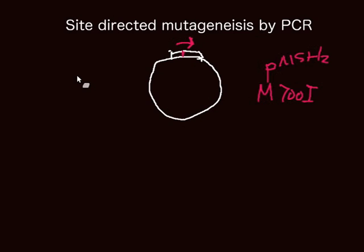In that primer, we are going to have a change — a mutation there. Basically we are going to have a mutation there, and that mutation will change the position of 700 methionine into isoleucine. So the isoleucine is where that mutation is, and originally the red is methionine.